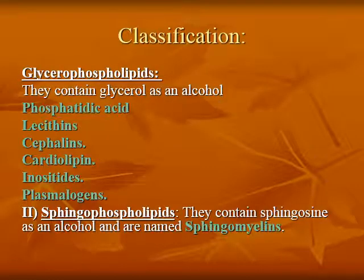Phospholipids can be classified into glycerophospholipids and sphingophospholipids, according to the alcohol present in each of them. In glycerophospholipids, they contain glycerol as an alcohol, and can be sub-classified into phosphatidic acid, lecithin, cephalin, cardiolipin, inositol phospholipids, and plasmalogen. Sphingophospholipids contain sphingosine as an alcohol and are named sphingomyelin.